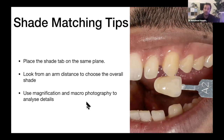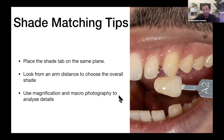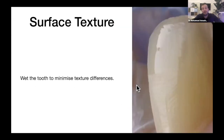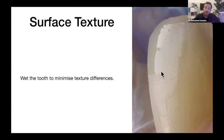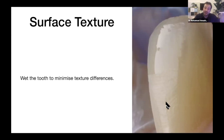So use bare vision from a distance for the normal shade assessment, and use magnification when trying to assess small details. Here's another important point — we always hear about wetting the surface before taking the impression, but rarely get the explanation of why. A wet surface doesn't have surface texture like a dry surface. When you have a wet surface, you can assess the shade without any influence from tooth reflection and texture. So always match your shade on a wet surface.